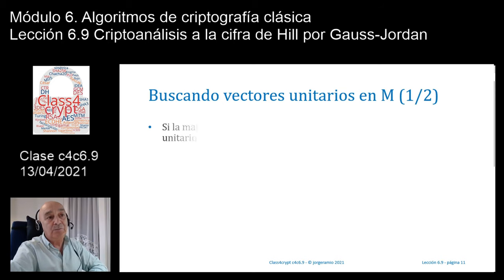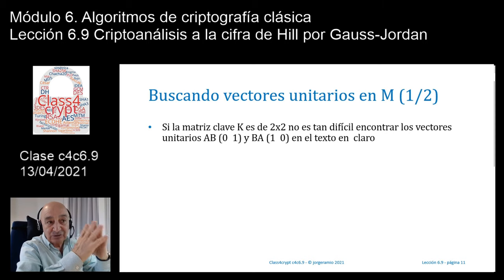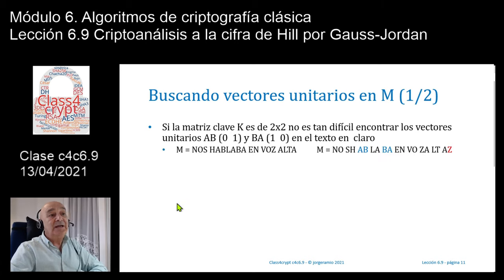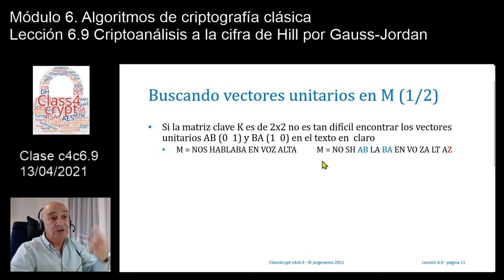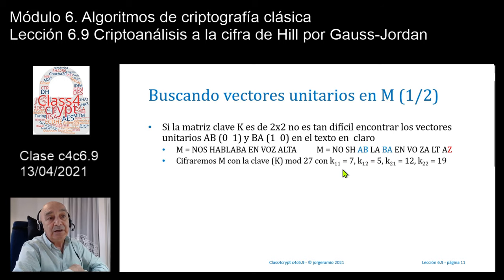Si busco vectores unitarios en el texto en claro M con una matriz de 2×2, el primer vector unitario 0,1 sería AB, y el segundo vector unitario sería BA. Supongamos que el texto en claro es 'nos hablaba en voz alta'. Haciendo una cifra de digramas, de 2 en 2, aparece aquí el A y la B, que es el primer vector unitario. Luego aparece la B y la A. Ya tengo los dos vectores unitarios, AB y BA.